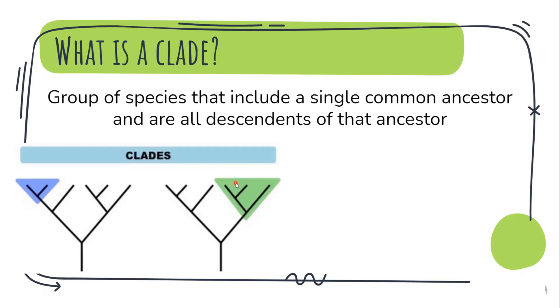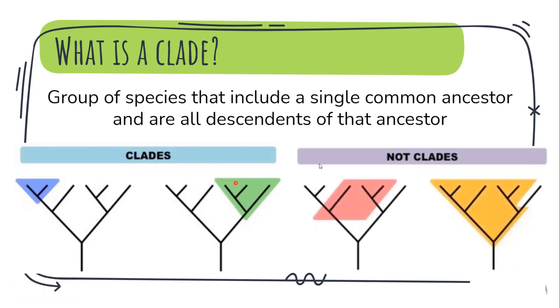Now let us see what a clade doesn't look like. So this is not a clade because it doesn't have a common ancestor. It branches from a different ancestor. Similarly this thing is not a clade. However if you include this portion it would have been a clade.